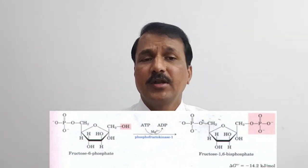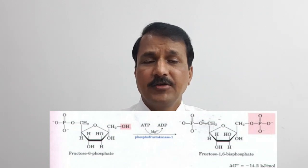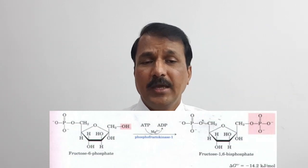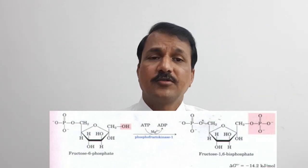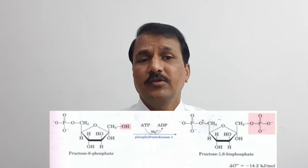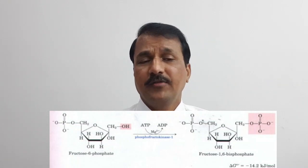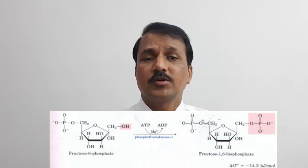The breakdown of ATP releases approximately −7.3 kcal of energy, which drives the otherwise endergonic conversion of fructose 6-phosphate into fructose 1,6-bisphosphate. The terminal phosphate from ATP is attached to the first carbon of fructose 6-phosphate, forming fructose 1,6-bisphosphate and making this reaction irreversible. This is one of the most regulated reactions in glycolysis.